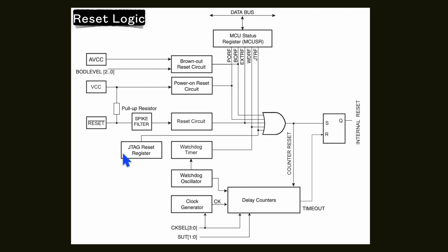The next one is the JTAG reset register. When we write logic 1 to it, your controller will go into reset state. This is done when we connect our JTAG for programming or debug. And the next type of reset is the Watchdog timer reset. With the help of the Watchdog timer, we can perform a reset on the microcontroller.